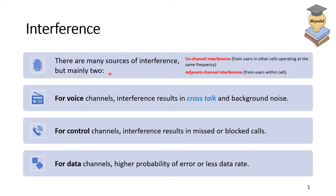This is Dr. Alim Gable and we're covering interference. There are many sources of interference in wireless communication. We have two main types: co-channel interference and adjacent channel interference. Co-channel interference is the interference from users in other cells operating at the same frequency, while adjacent channel interference is from users within the same cell.